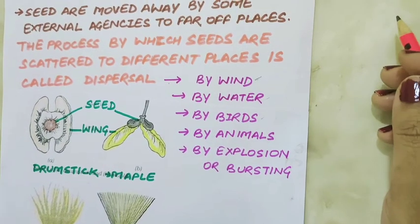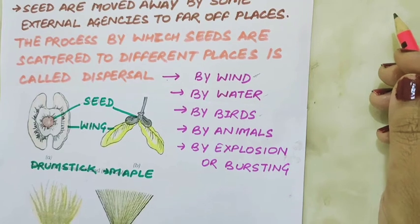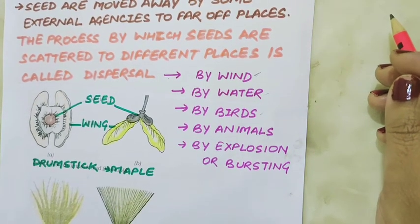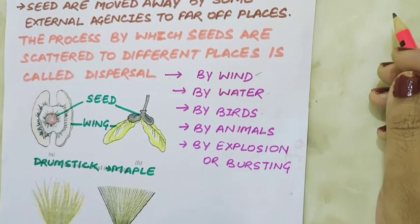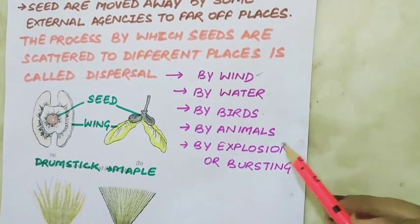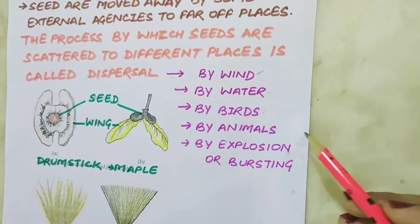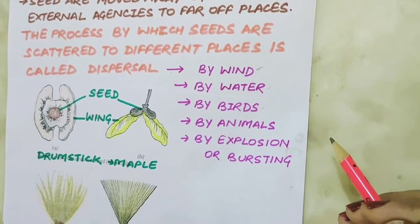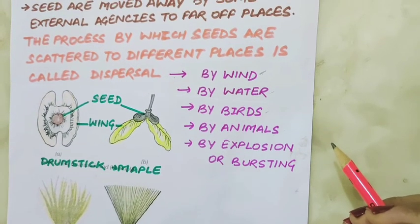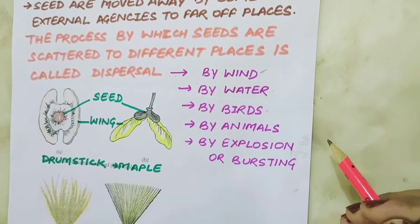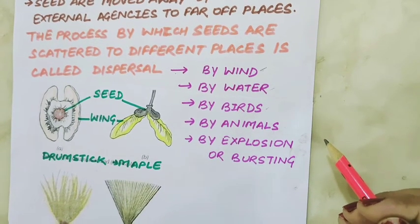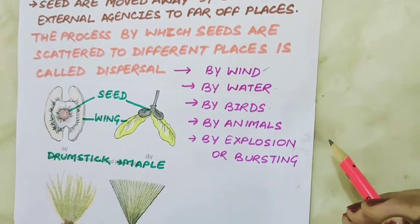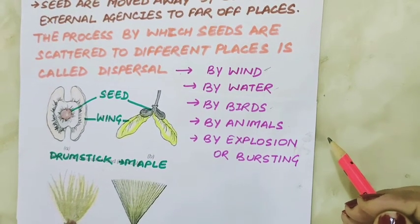Birds eat fruits along with the seeds, which have a hard outer covering. The seeds are dispersed to other places through birds' feces. Some seeds have hooks or spines which attach to the fur of grazing animals. For example, the fruits of xanthium and urina have numerous hooks which attach to animal fur and are dispersed with them.